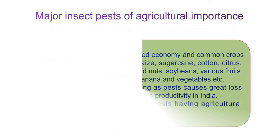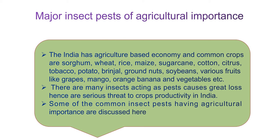India has an agricultural-based economy, and common crops such as sorghum, rice, maize, sugarcane, cotton, citrus, tobacco, potato, groundnuts, soya bean, and various fruits like grapes, mango, orange, and banana, as well as different kinds of vegetables, are all affected by insect pests. These insects cause great loss to such crops and are serious threats to crop productivity in India. We will discuss some common insect pests of agricultural importance one by one.